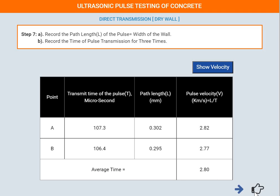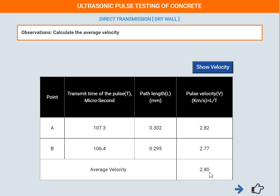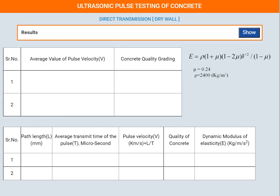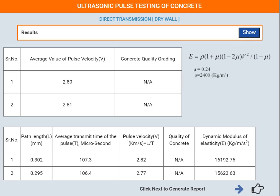The average velocity is 2.80 kilometers per second. We now calculate the dynamic modulus of elasticity, E, using the formula: E = ρV² × (1 + ν)(1 − 2ν) / (1 − ν), where ν is the Poisson's ratio. For concrete, the Poisson's ratio is 0.24 and the density ρ is 2400 kg/m³.